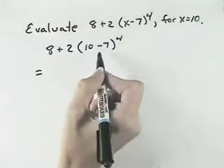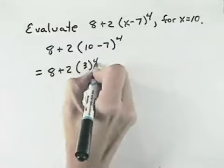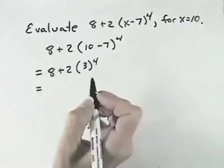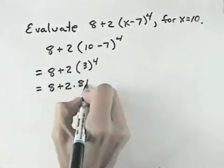Using order of operations, we do inside the parentheses first, so we leave the 8 plus the 2, and 10 minus 7 is 3 raised to the 4th power. Our next step in order of operations is the exponent, so we have 8 plus 2 times 3 to the 4th power, which is 81.